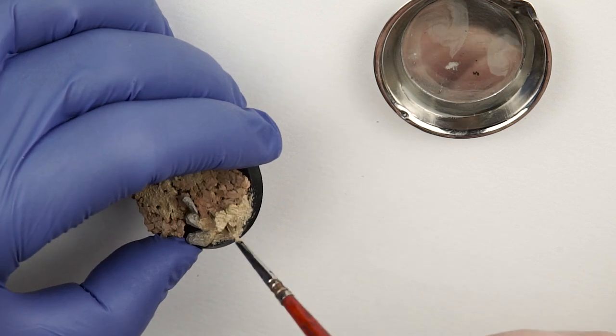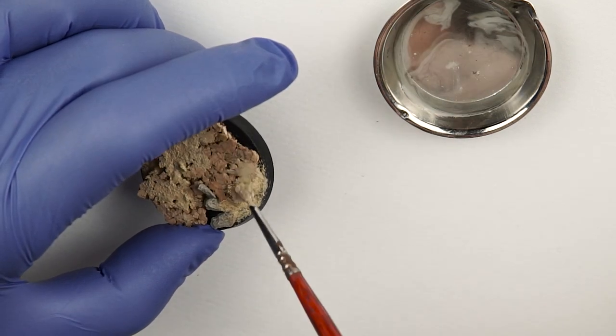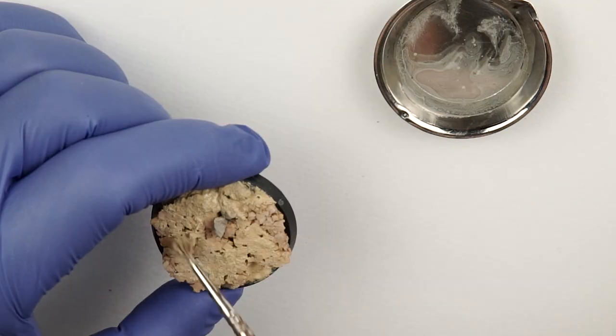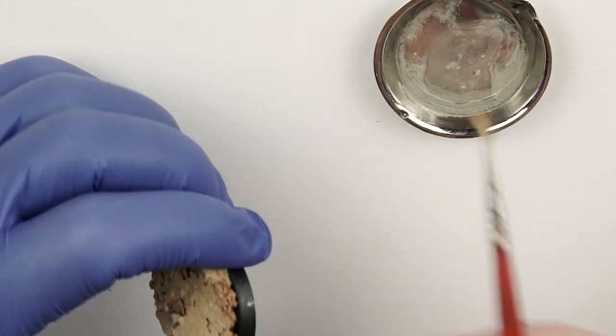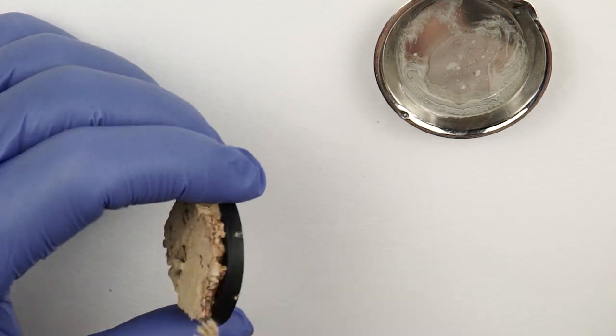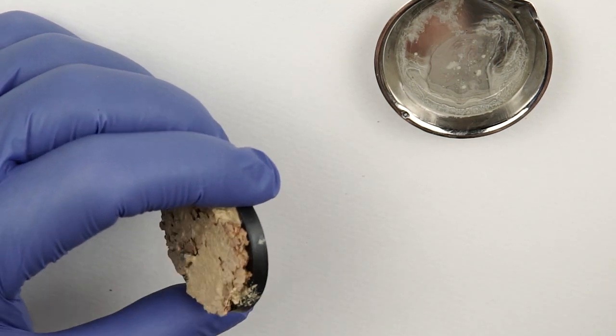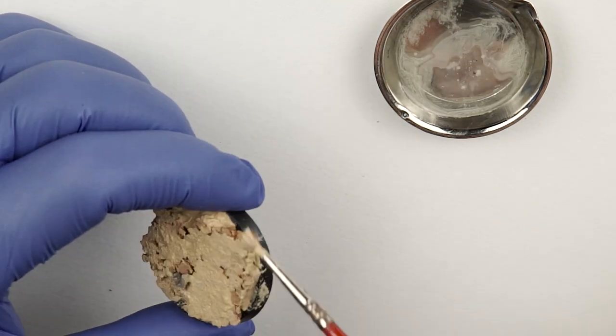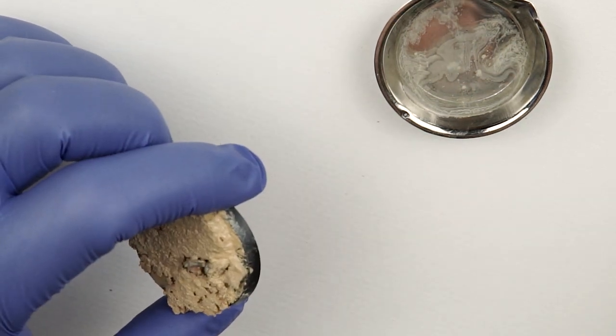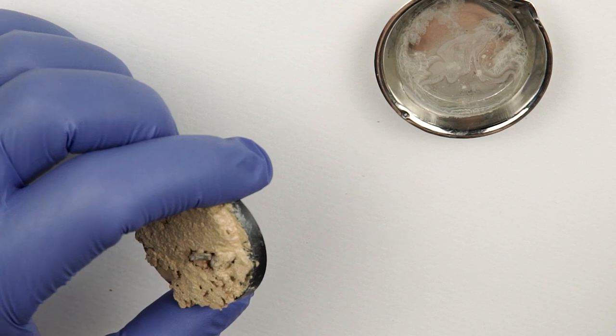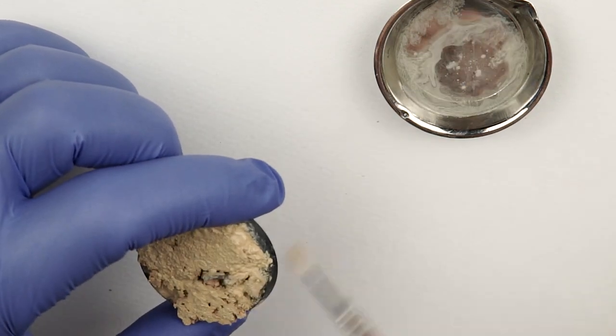Don't worry if the rim of the base gets dirty from the paste. It can easily be cleaned with water or alcohol. I will let the paste dry overnight to ensure that I will not have any issues during the painting process.